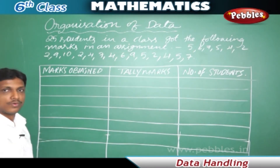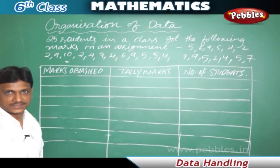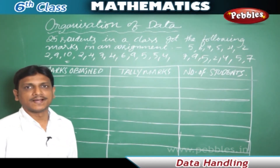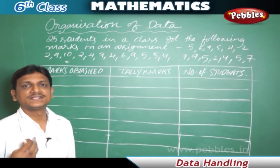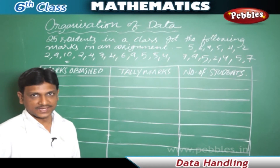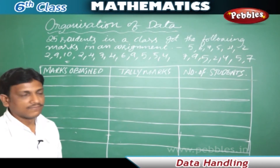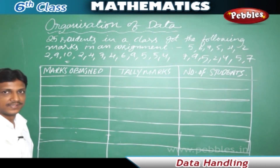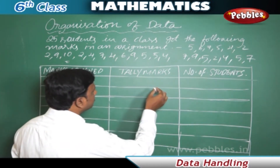When the data is more, we need to organize it properly. Here we have raw data from which we need specific information — which mark is obtained by the maximum number of students, what is the maximum mark, how many students got the least mark, and how many got eight marks. To answer such questions we use a table to organize the raw data.